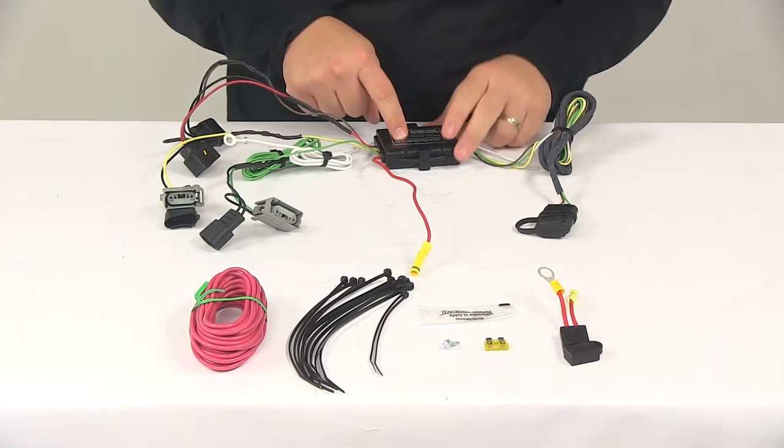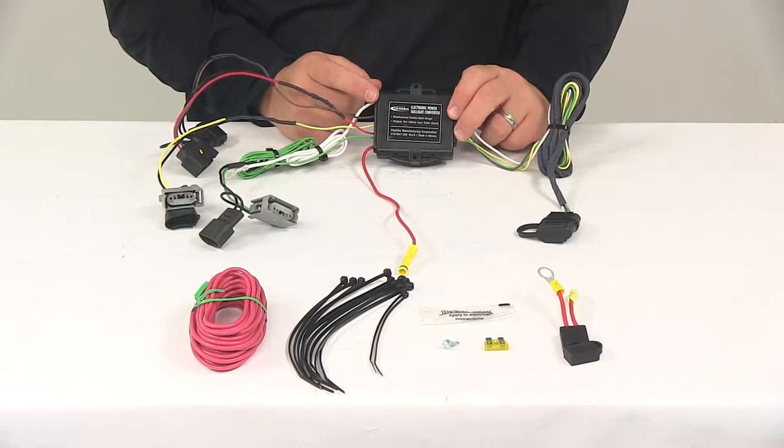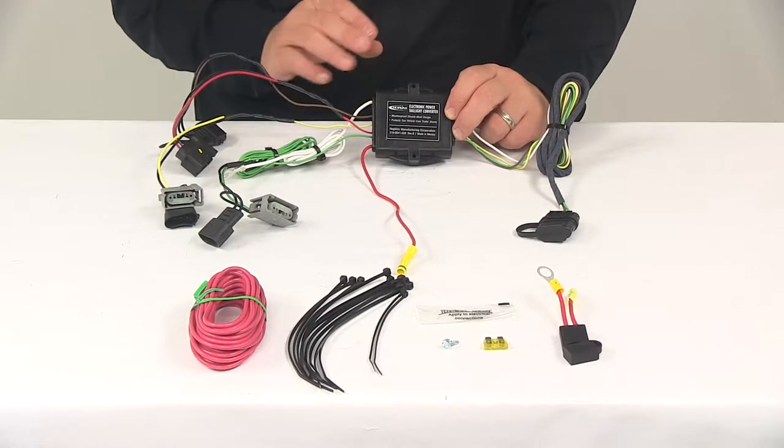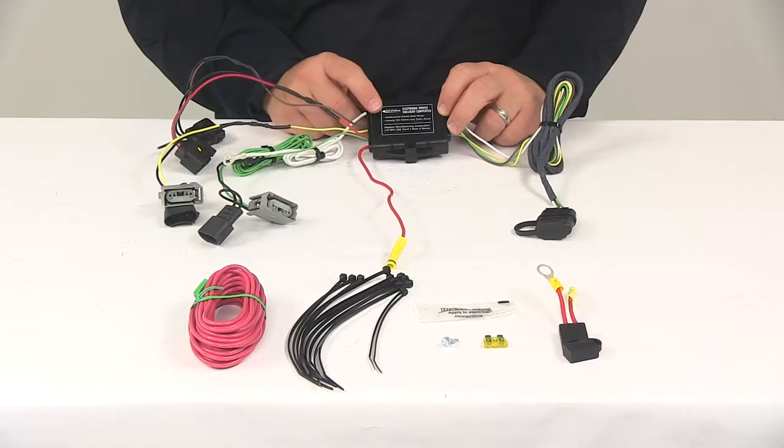The black box right here, this is the included tail light converter. This ensures that your vehicle's wiring matches that of your trailer's. The power module connects directly to the vehicle battery through the wiring, which is going to avoid overloading the vehicle's electrical system.